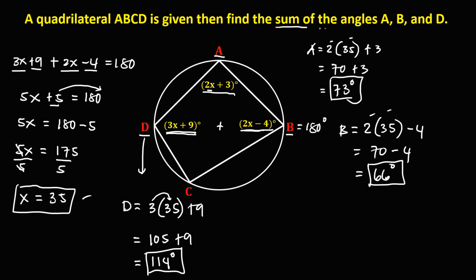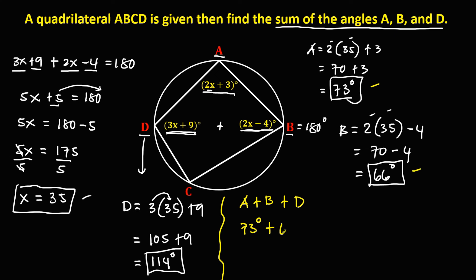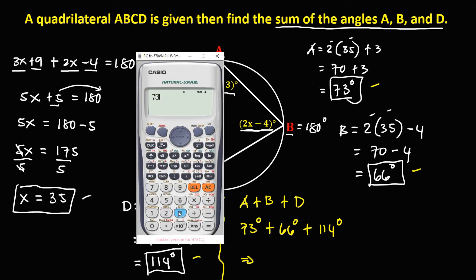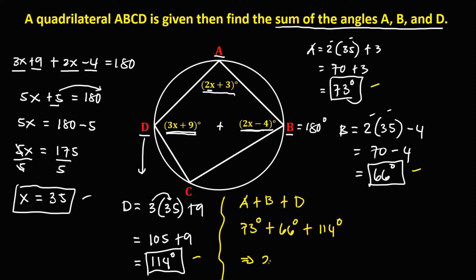To solve for the sum of angles A, B, and D: angle A plus angle B plus angle D — that's 73 degrees, 66 degrees, and 114 degrees. So 73 plus 66 plus 114 equals 253. The sum of angles A, B, and D is 253 degrees.